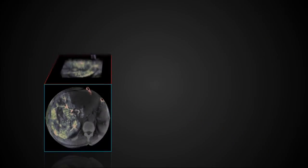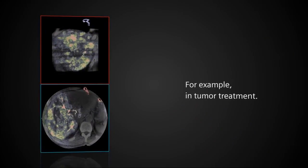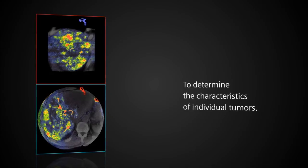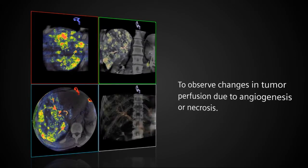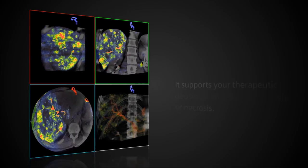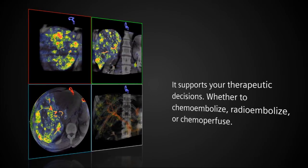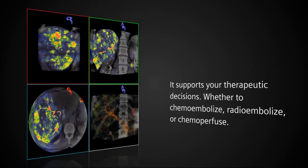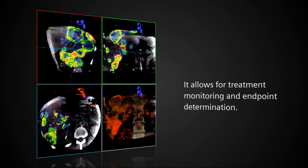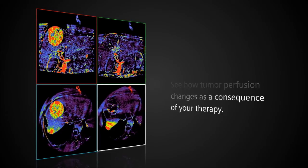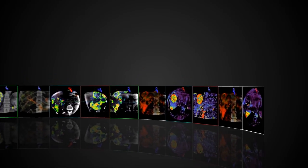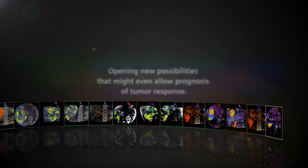A major step towards a better understanding of lesions — for example, in tumor treatment — to determine the characteristics of individual tumors, to observe changes in tumor perfusion due to angiogenesis or necrosis. It supports your therapeutic decisions, whether to chemo embolize, radio embolize, or chemo perfuse.